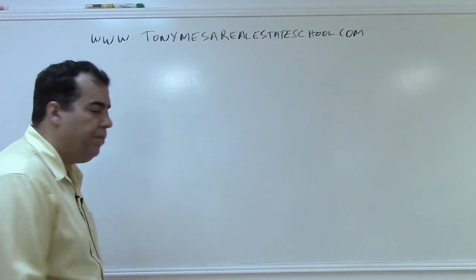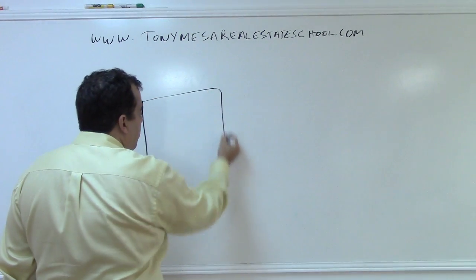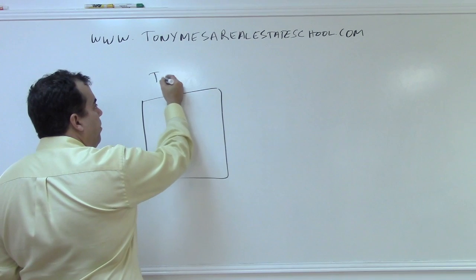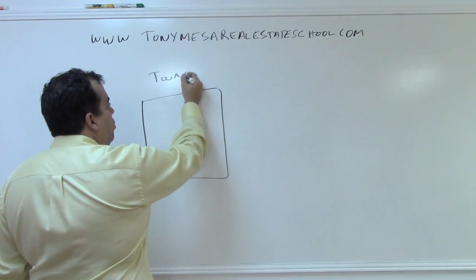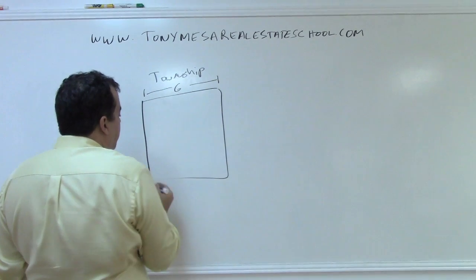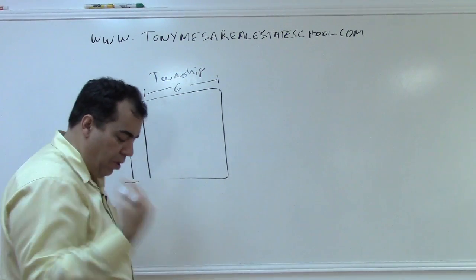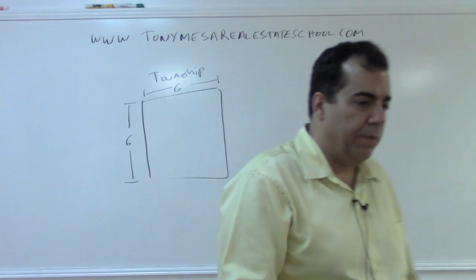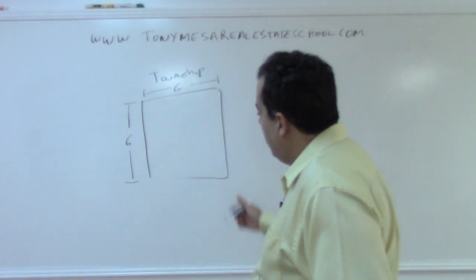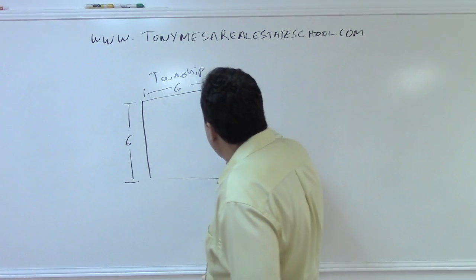What happens is in the government survey system, these huge squares called townships are formed, and a township is a big piece of land that is six miles by six miles. Now, what happened is when they were marking off these townships, they had to have a way of making them smaller.